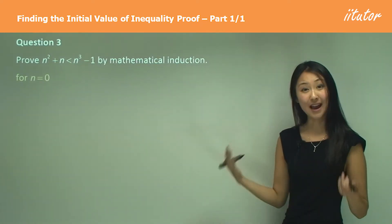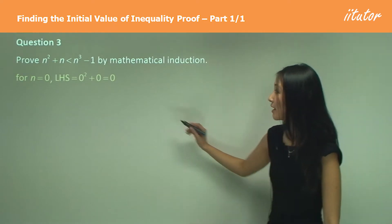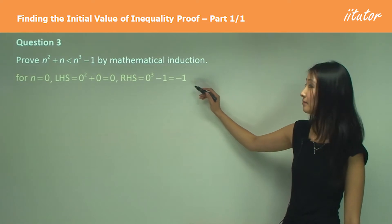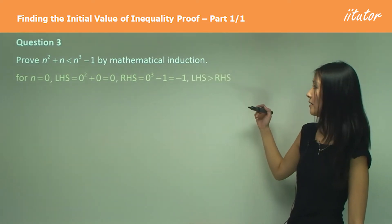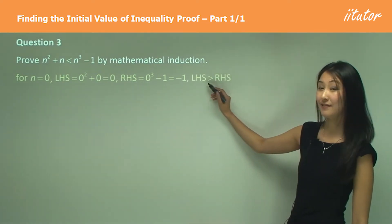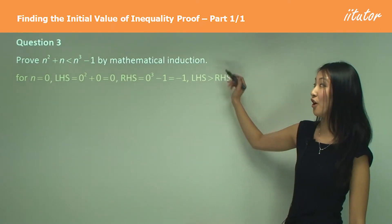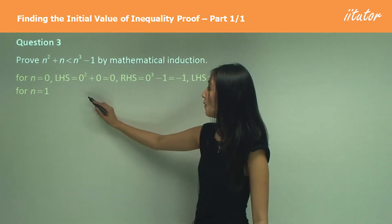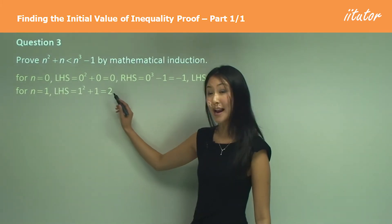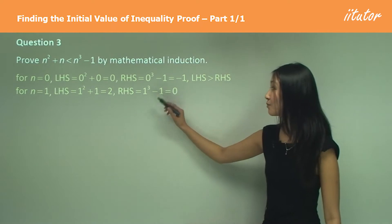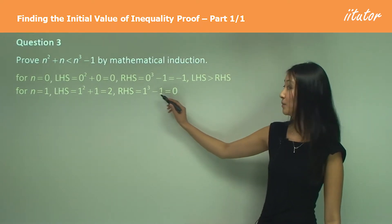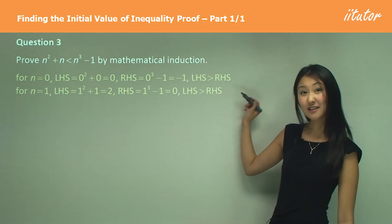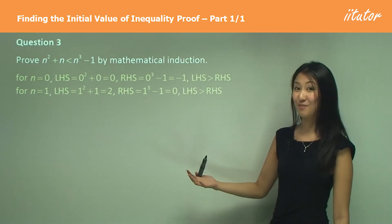We always start off with n equals 0. The left-hand side equals 0 whereas the right-hand side is negative 1. Now 0 is greater than negative 1, so the left-hand side is greater — that doesn't satisfy the inequality. Moving on to n equals 1: we have 1 squared plus 1 equals 2. The right-hand side is 1 cubed minus 1, which equals 0. Once again the left-hand side is greater than the right-hand side, so it doesn't work for that either.